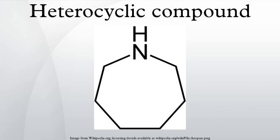Some noteworthy developments: in 1818, Brugnatelli isolated alloxan from uric acid. In 1832, Döbereiner produced furfural by treating starch with sulfuric acid. In 1834, Runge obtained pyrrole by dry distillation of bones. In 1906, Friedländer synthesized indigo dye, allowing synthetic chemistry to displace a large agricultural industry. In 1936, Treibs isolated chlorophyll derivatives from crude oil, explaining the biological origin of petroleum.